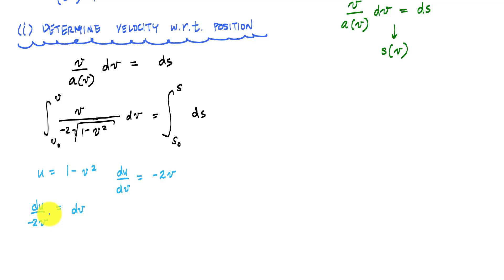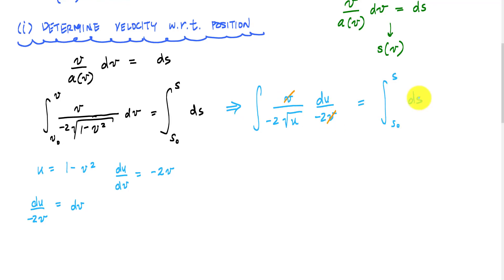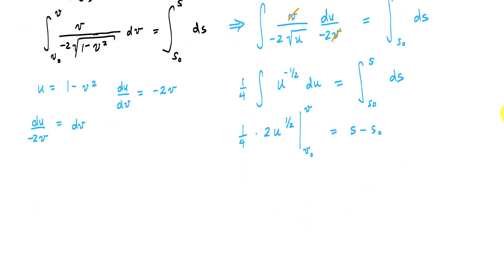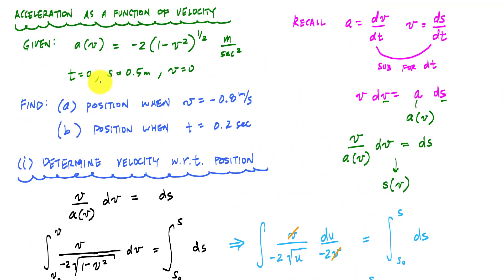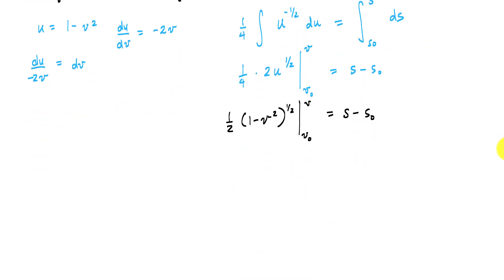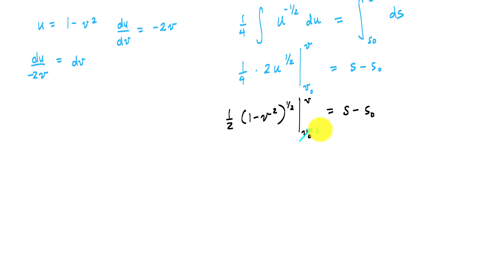Making the substitution, all the velocity terms cancel out, and I can integrate u to the negative one-half. Substituting u back in and applying the initial conditions — at t equals 0, s naught equals 0.5 meters and velocity is 0 — the bounds for the integral are 0 to v and 0.5 meters to s.